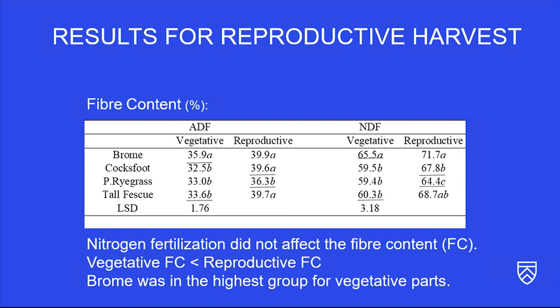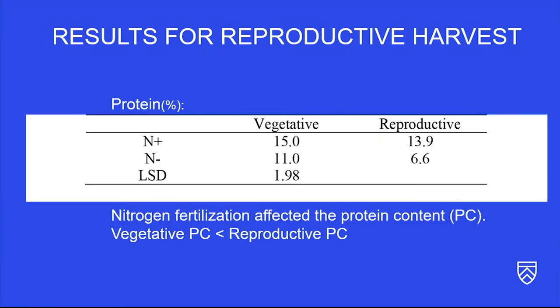For reproductive components, ryegrass had the lowest fiber content. Vegetative components had lower fiber content than reproductive ones overall. For protein, there was no difference between species, but nitrogen had a significant effect on protein content, and vegetative parts again had higher protein content than reproductive ones.